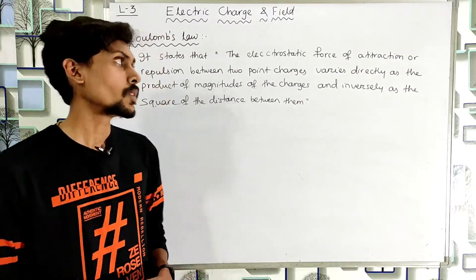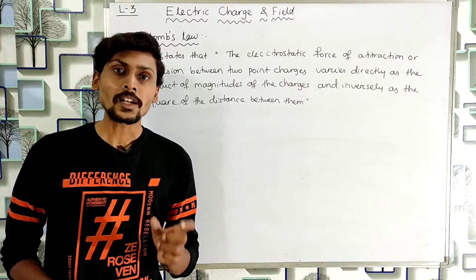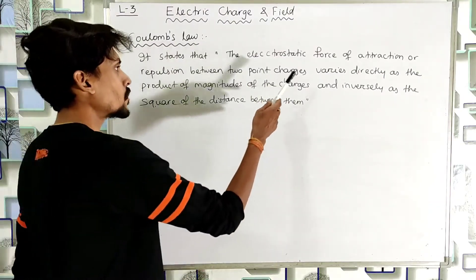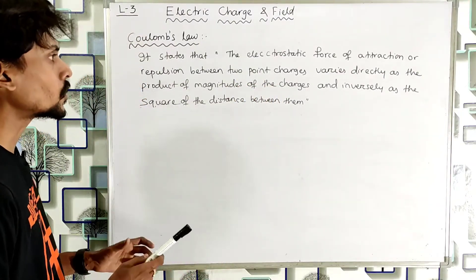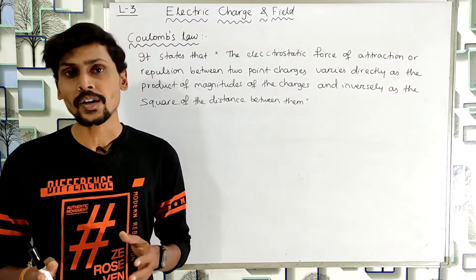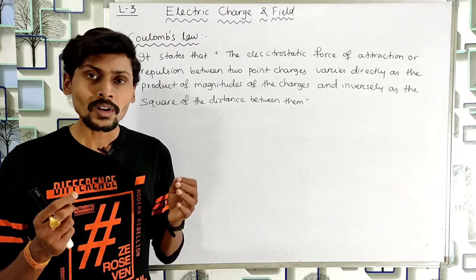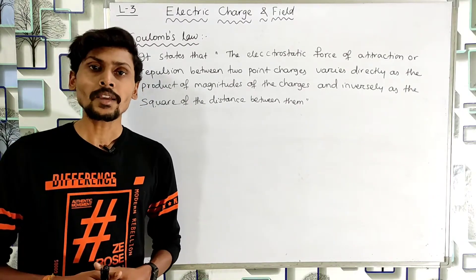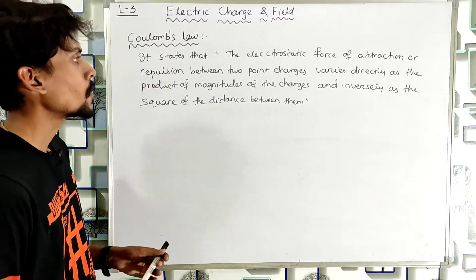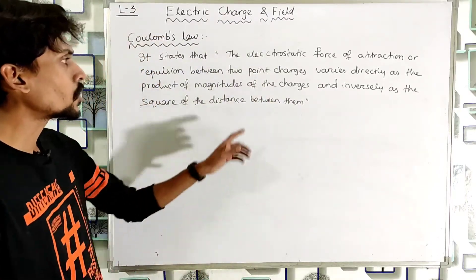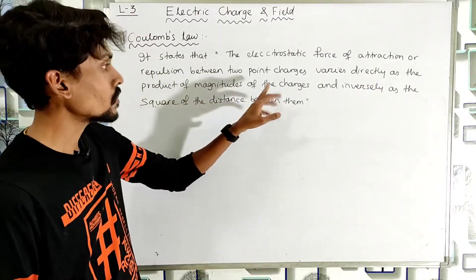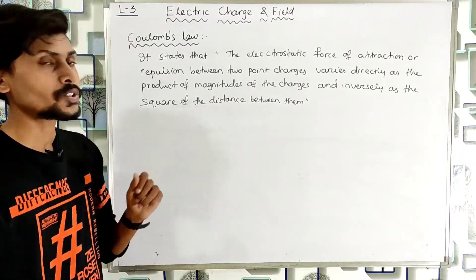Similarly, we have Coulomb's law which helps us to calculate the electrostatic force between two point charges. This law states that the electrostatic force of attraction or repulsion between two point charges varies directly as the product of magnitudes of the charges and inversely as the square of the distance between them. If we have two like charges the force is repulsive, and if we have two unlike charges the force will be attractive.